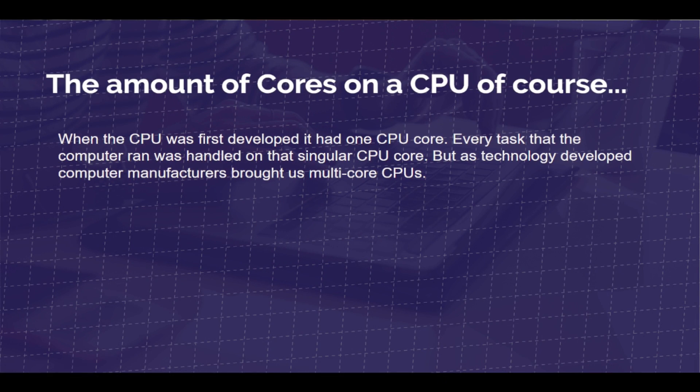We're talking about CPU cores. What is a CPU core? It is the amount of cores on a CPU. When the CPU was first developed, it had one CPU core on it. Every task that the computer ran was handled on that singular CPU core, but as technology developed, computer manufacturers brought us multiple CPU cores.